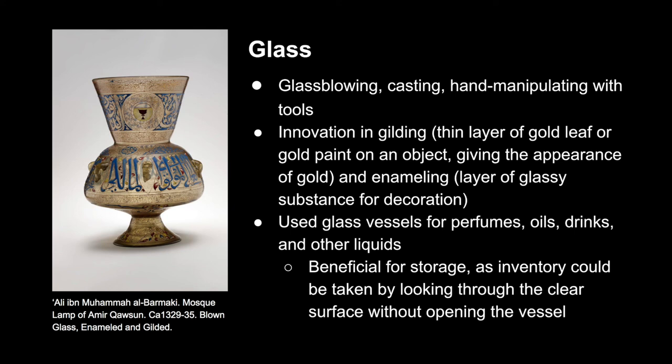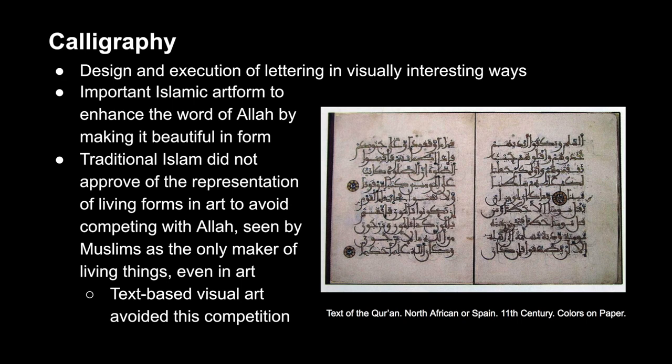Next we have Islamic glasswork. They used glassblowing, casting, and hand manipulating with tools. Their glasswork also sought innovation with gilding, which is where you put a thin layer of gold leaf or gold paint onto an object, and enameling, which is similar but gives an appearance of a glassy substance rather than gold. Glass vessels were used for perfumes, oils, drinks, and other liquids, and were especially beneficial for storage since inventory could be taken by looking through the clear surface without opening the vessel.